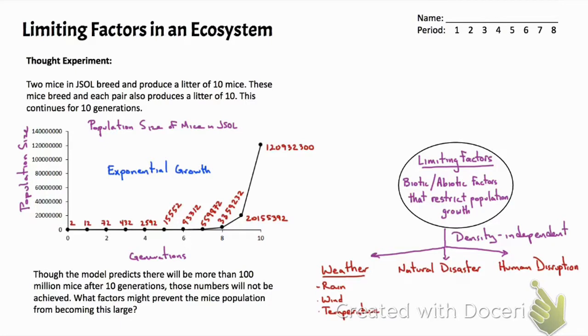We could have natural disasters which have very profound effects in a short period of time, such as hurricanes, flooding, drought, and fire. We can also have human disruptions that might limit the size of populations.